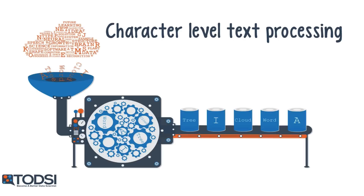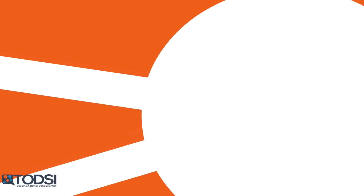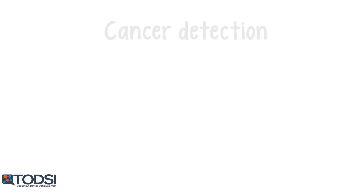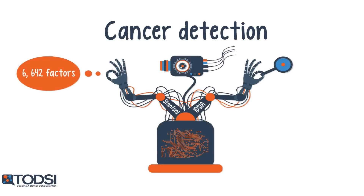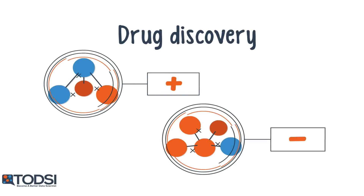Even recurrent nets have found uses in character-level text processing and document classification. Deep nets are now beginning to thrive in the medical field. A Stanford team used deep learning to identify over 6,000 factors that help predict the chances of a cancer patient surviving. Researchers from IDSIA in Switzerland created a deep net model to identify invasive breast cancer cells. Beyond this, deep nets are even used for drug discovery. In 2012, Merck hosted the Molecular Activity Challenge on Kaggle in order to predict the biological activities of different drug molecules based solely on chemical structure.